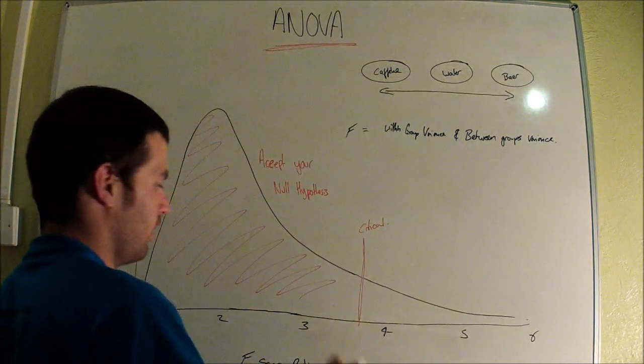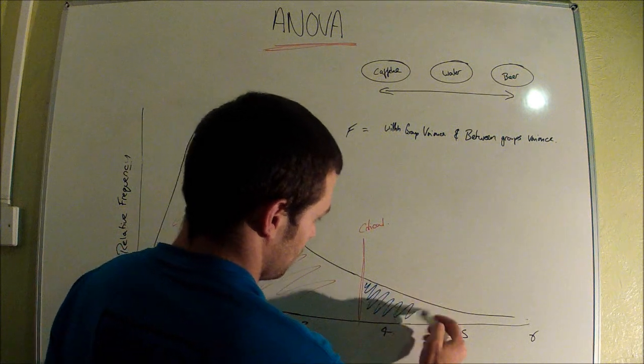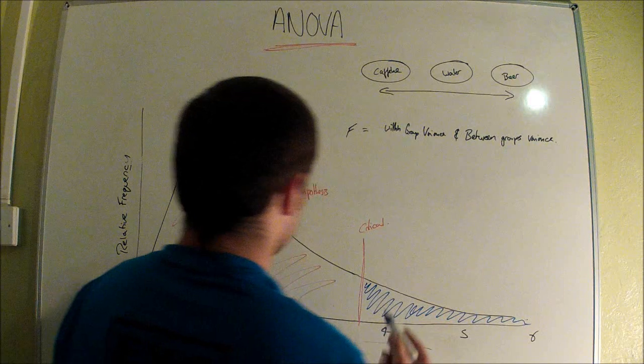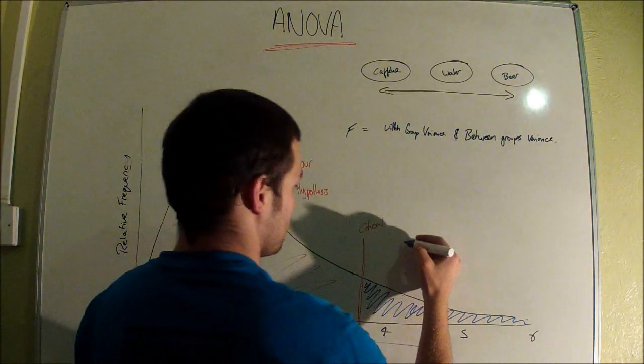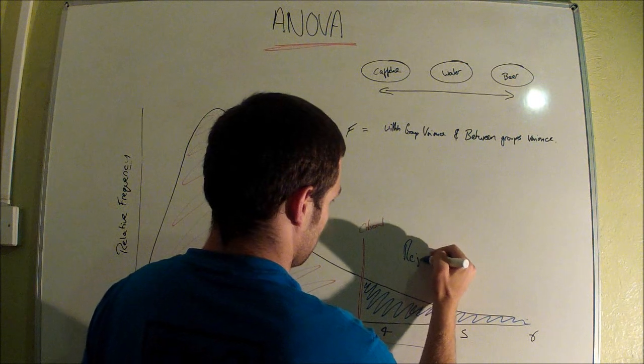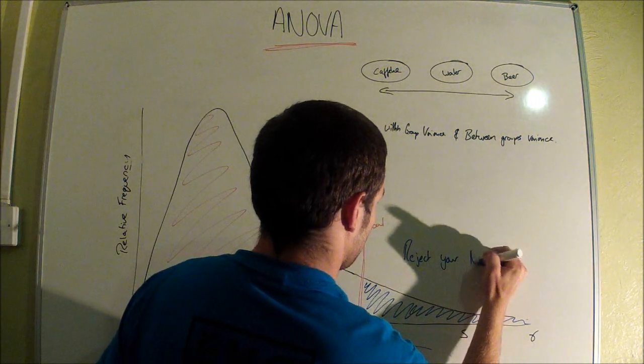If your calculated F is larger than that value—so along this bottom axis it's larger than that value and F falls on this side—then there is a significant difference somewhere within those groups, and you would reject your null hypothesis.